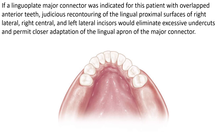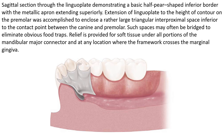If a linguaplate major connector was indicated for a patient with overlapped anterior teeth, judicious recontouring of the lingual proximal surfaces of the right lateral, right central, and left lateral incisors would eliminate excessive undercuts and permit closer adaptation of the lingual apron. A sagittal section through the linguaplate demonstrates a basic half pear-shaped inferior border, with the metallic apron extending superiorly to the height of contour on the premolar to enclose a large triangular interproximal space inferior to the contact point between the canine and premolar.